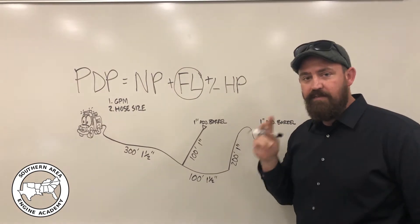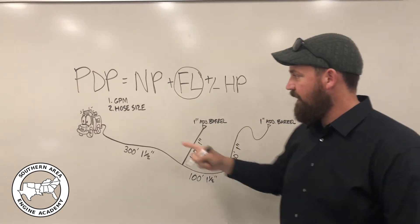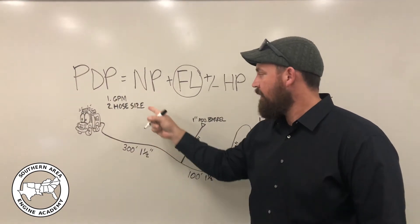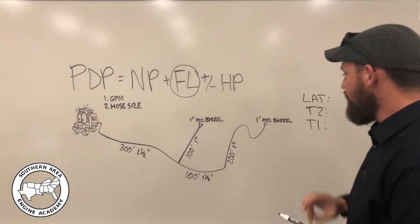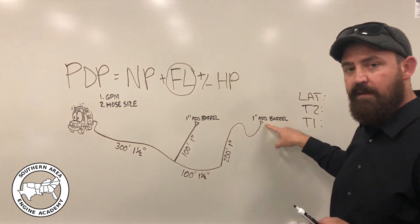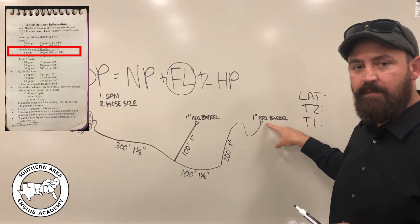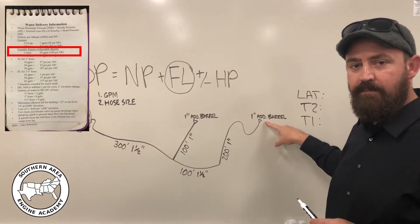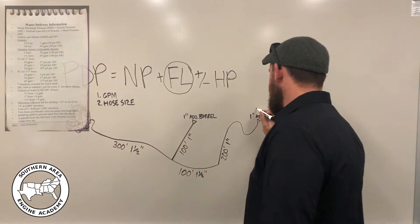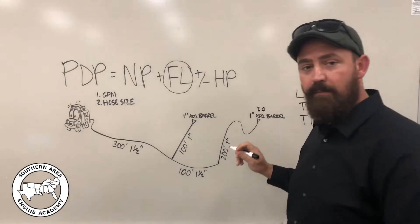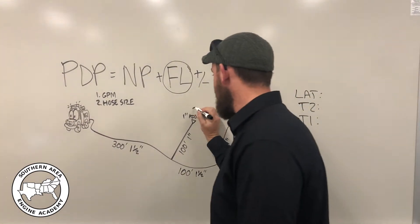So we said we need to know two things to determine the friction loss, the GPM or the flow, and the hose size. So to determine the flow, we look at the nozzle. We've got a one inch adjustable barrel, which flows at 20 GPM. So each of these, they're both one inch adjustable barrels, they'll both flow at 20 gallons per minute.